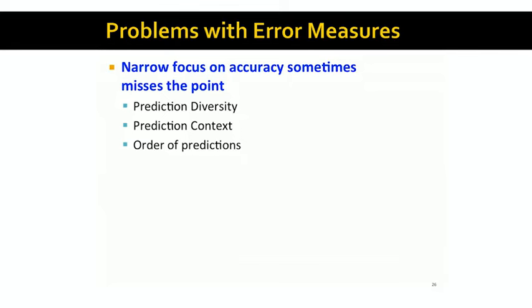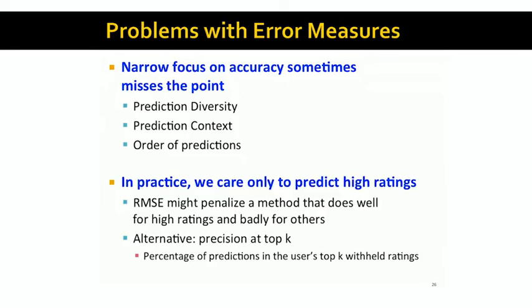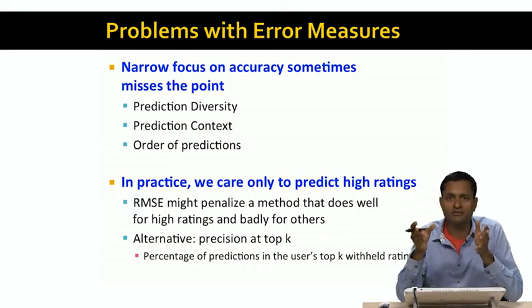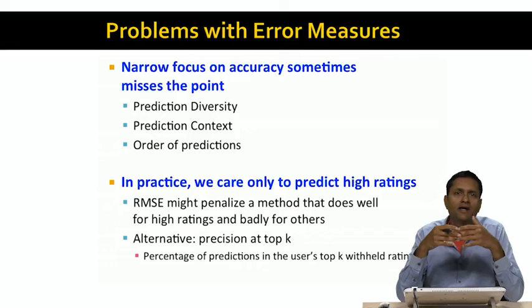Note also that in practice, we only care to predict high ratings. So we've sort of set up this whole problem of predicting the rating of a user x for an item i. But in practice, we don't really care what the rating of user x for item i is if that rating value is low and the user really doesn't like the item. We're only going to recommend items to the user that the user really cares about.